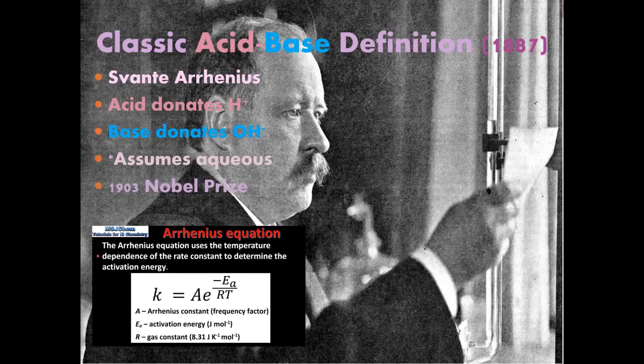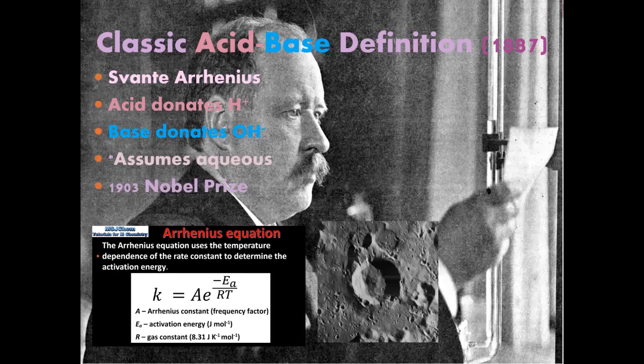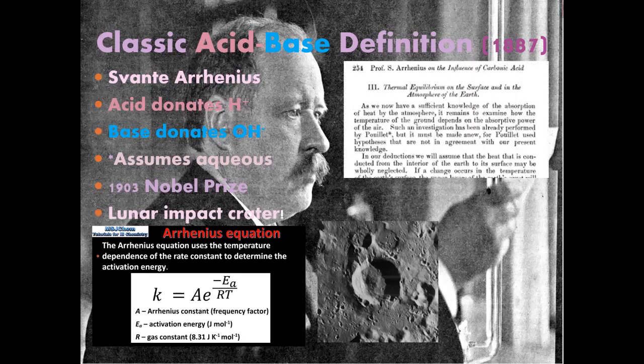Arrhenius wins the Nobel Prize in 1903—the first Nobel Prize was 1901, and Alfred Nobel was a chemist. Arrhenius's ideas were so important that they named a crater on the moon after him. He also was, I believe, the first scientist to come up with the idea of the greenhouse effect. Over 100 years ago he said all this industrialization is creating a glass window over the planet and we're changing the temperature.